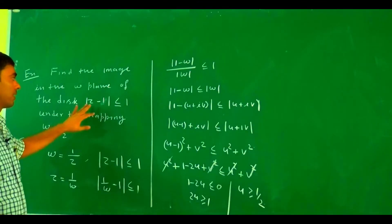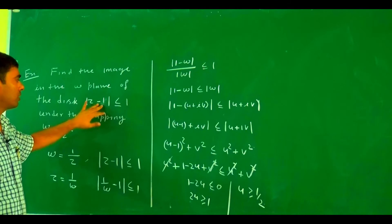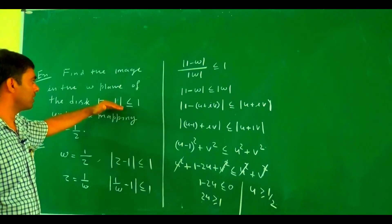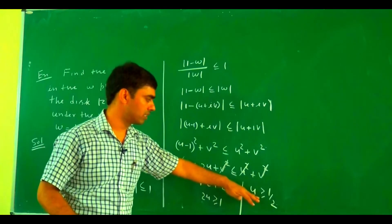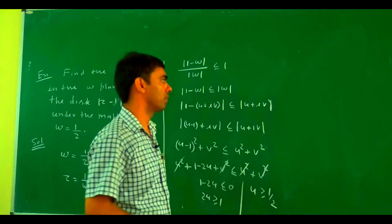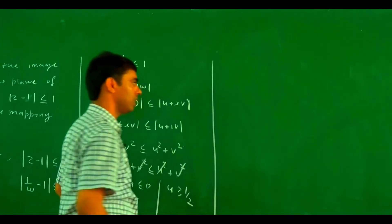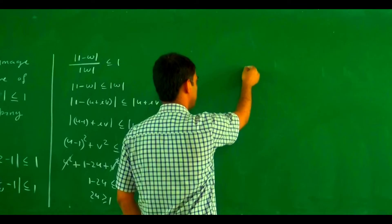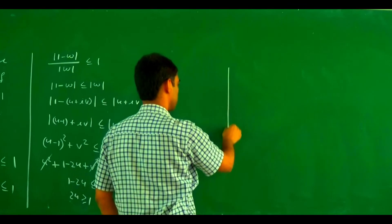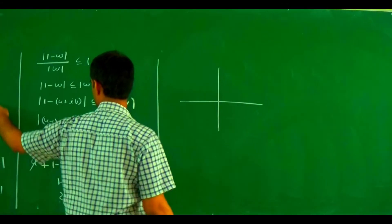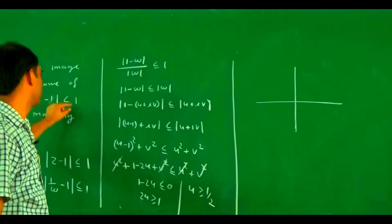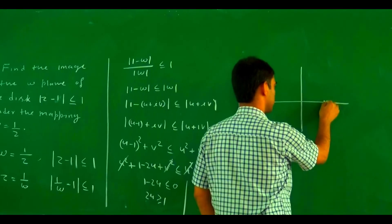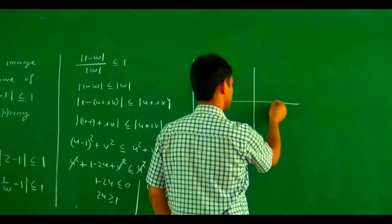The original region |z − 1| ≤ 1 is a disk with center at (1, 0) and radius 1 in the z-plane.